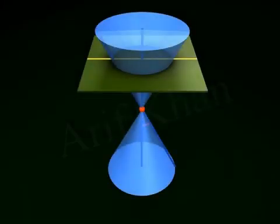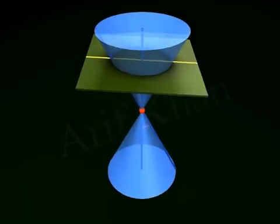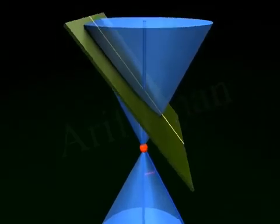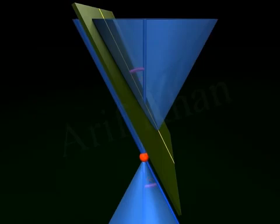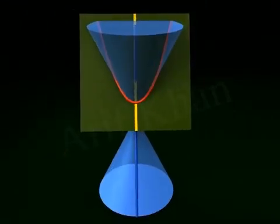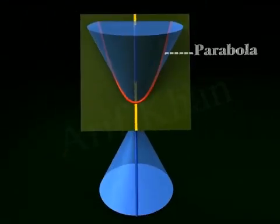Parabola. When the angle made by the plane to the vertical axis is exactly equal to the vertex angle, we get an open curve called a parabola at the intersecting surface of the cone.